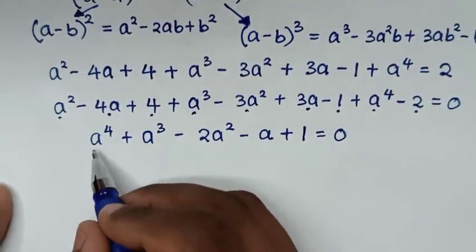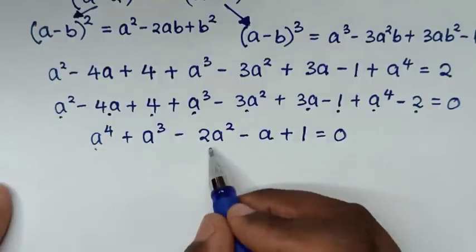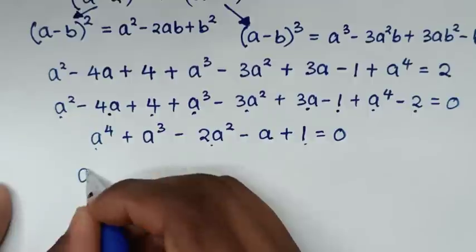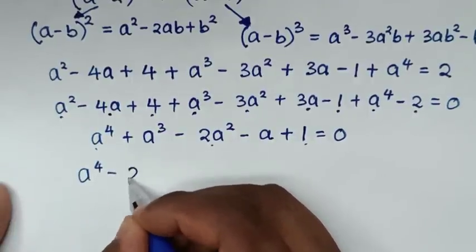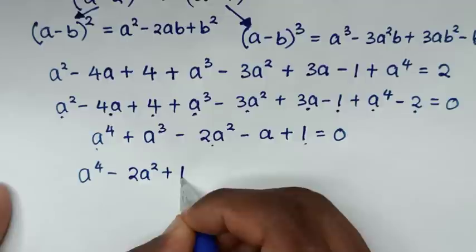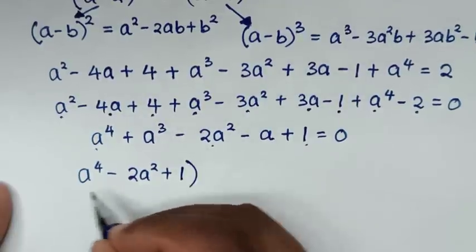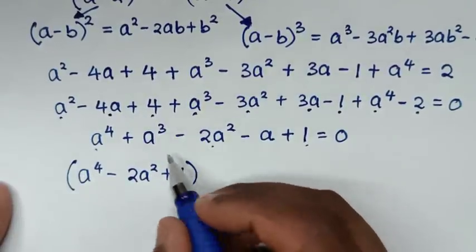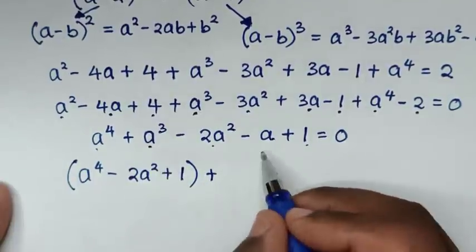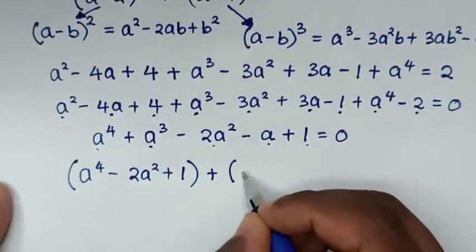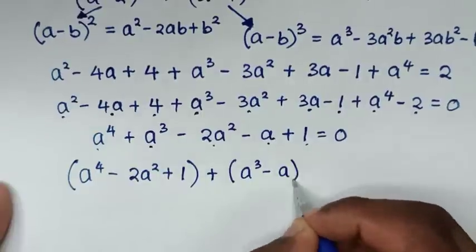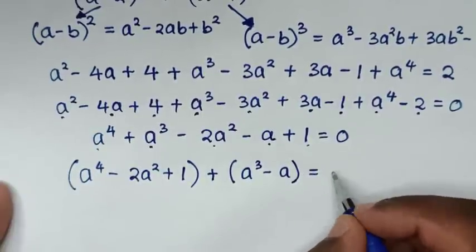In the next step, we group together a power of 4 minus 2a square plus 1, and then plus bracket a power of 3 minus a bracket, which is equal to 0.